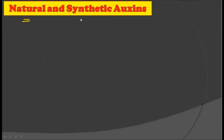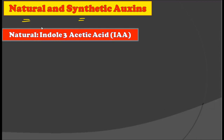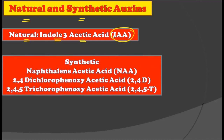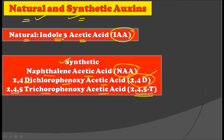There are not only natural auxins but also synthetic auxins. The natural auxin is indole-3-acetic acid, that is IAA, which is naturally found in plants. The synthetic auxins are naphthalene acetic acid (NAA), 2,4-dichlorophenoxyacetic acid (2,4-D), and 2,4,5-trichlorophenoxyacetic acid (2,4,5-T). Among these, 2,4-D is largely used in agricultural applications and is the most well-known synthetic auxin.